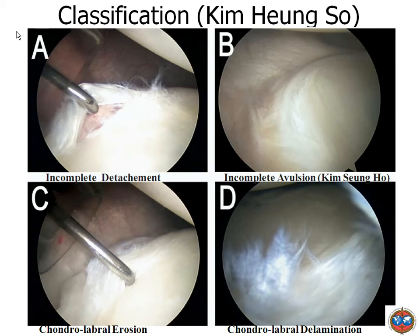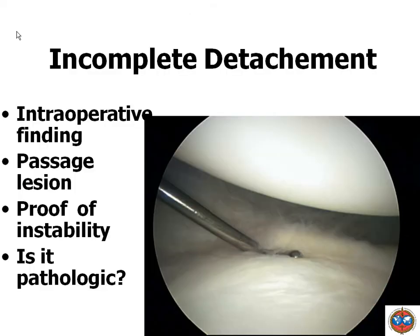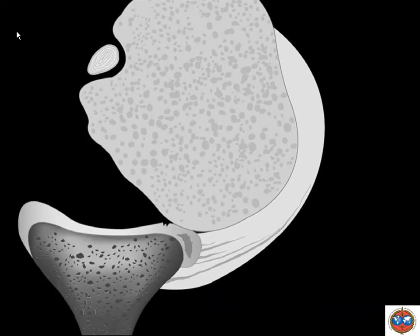There is a lesion classification by a colleague from Korea who made a repertoire of discrete lesions: incomplete detachment of the labrum that can be shaved or fixed, incomplete avulsion, central labrum erosion, and delamination — all arthroscopic findings. From a practical point of view, these lesions should not be completely fixed or repaired because it will result in stiffness. This incomplete detachment is an intraoperative finding that should not be repaired. If the shoulder subluxates in sports this way, fixing it can result in stiffness.